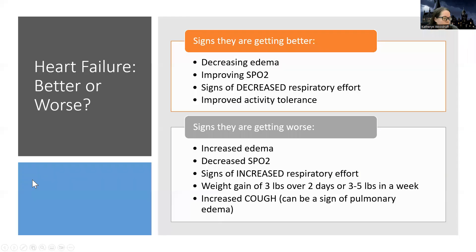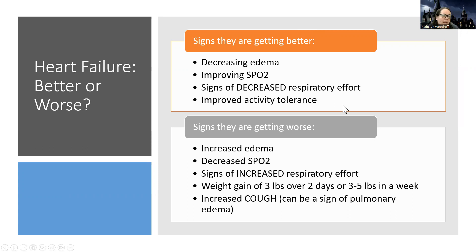That's right-sided heart failure. So how do we know someone with heart failure is getting better or worse? Depending on the type — left versus right — they're going to have different signs. Better would be decreasing edema, improved oxygenation, signs that they're not working so hard — like work of breathing and accessory muscle use is better — and tolerating activity. Maybe they can do activities of daily living a little bit easier.